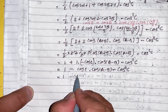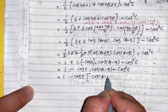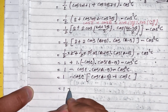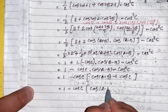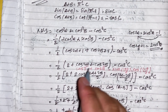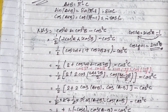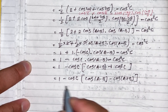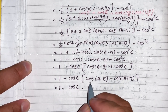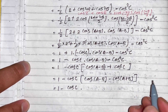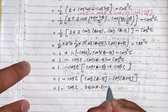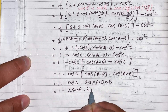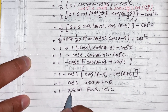Expanding cos(a minus b) plus cos c using sum-to-product, and substituting cos(a plus b) equals minus cos c. After simplification: 1 minus cos c times cos(a minus b) minus cos(a plus b), which equals 1 minus 2 sin a sin b cos c.